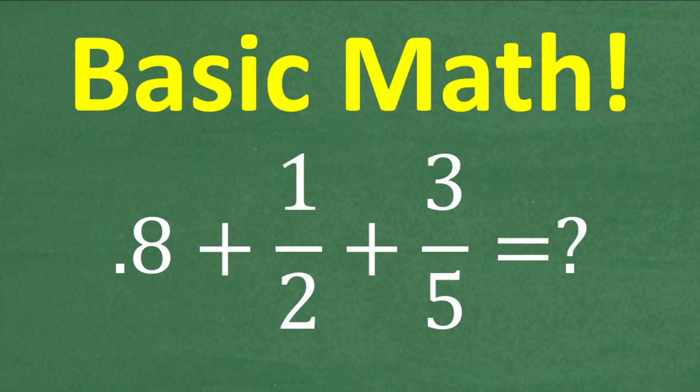Okay, so we have 0.8 plus 1 half plus 3 fifths. We have a decimal and a couple fractions. So obviously we're going to need to know something about decimals and fractions and how to convert maybe from a decimal to a fraction or a fraction to a decimal.